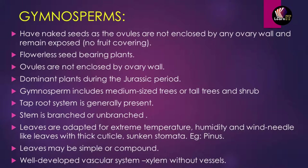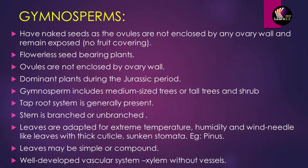Gymnosperm leaves have a thick cuticle and sunken stomata — for example, Pinus. Leaves may be simple or compound. Gymnosperms have a very well-developed vascular system, though xylem lacks vessels — there is xylem and phloem but no vessel elements in the xylem.